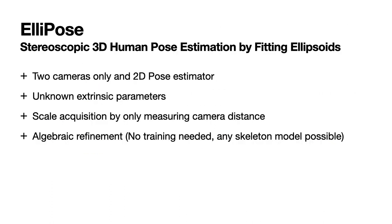This is why we present ElliPose. Given a 2D pose estimator is available, our algorithm only needs two cameras with unknown extrinsic parameters. If the camera distance is additionally provided, our algorithm is also able to acquire proper scale. Furthermore, our algorithm is, beside the 2D input pose, fully algebraic, and therefore does not need any further training and can be adjusted to any key point definition.